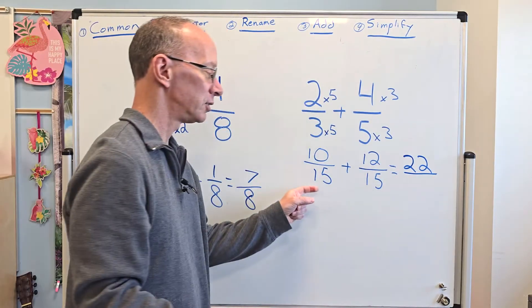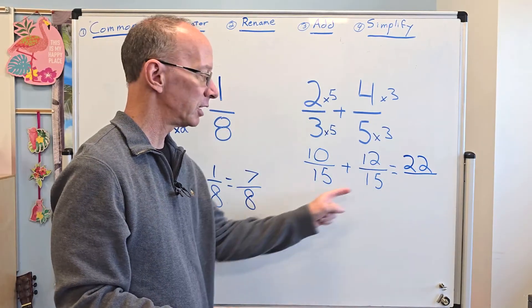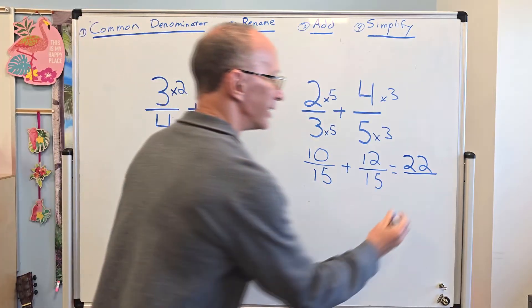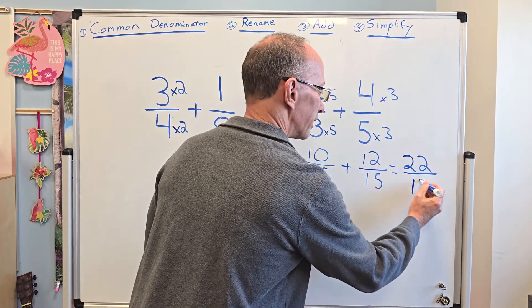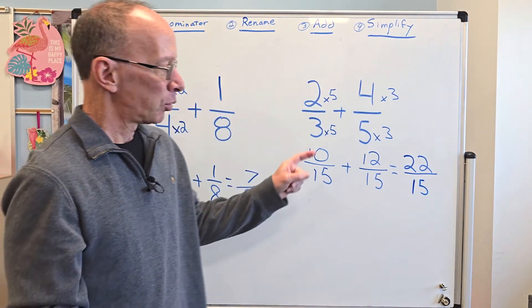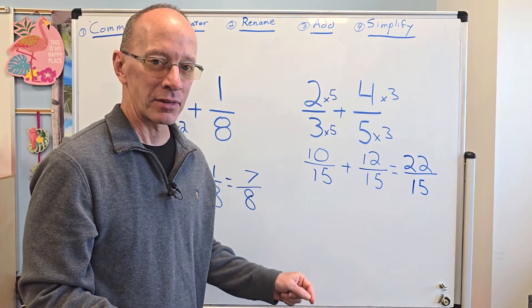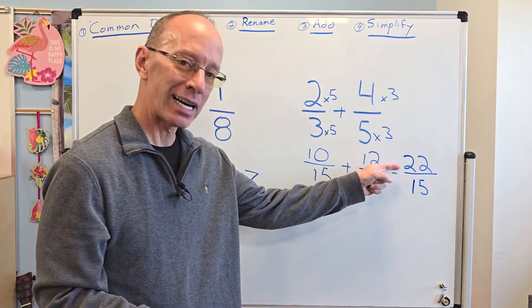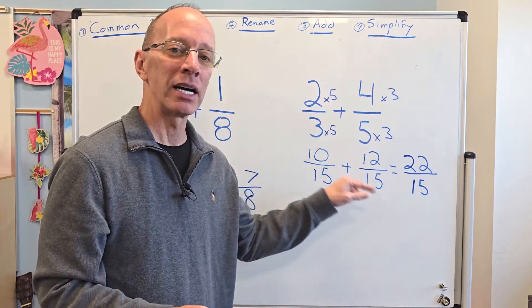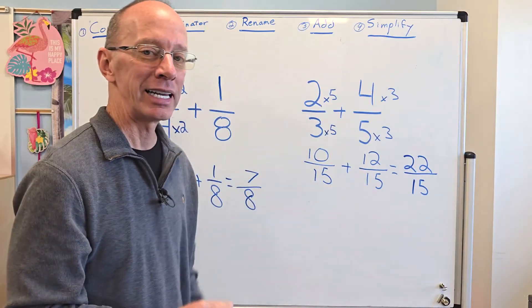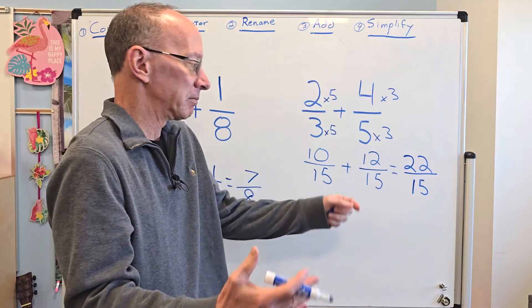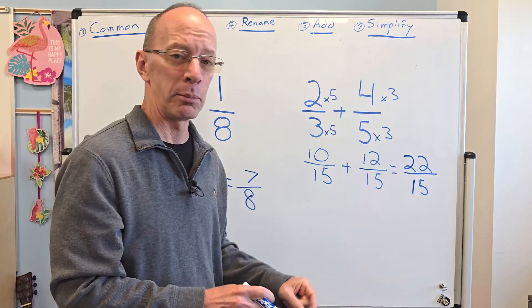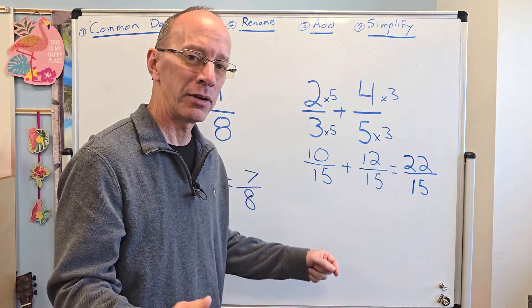Now, don't get in the mistake of saying 15 plus 15. No, the denominators are the same. So keep it the same. So I'm going to put 15 right here. 22 fifteenths. Now, when we run into a fraction like that, when the number on the top is bigger than the number on the bottom, that is called an improper fraction. So we need to change that over to a proper fraction. How do we do that? We're going to divide.